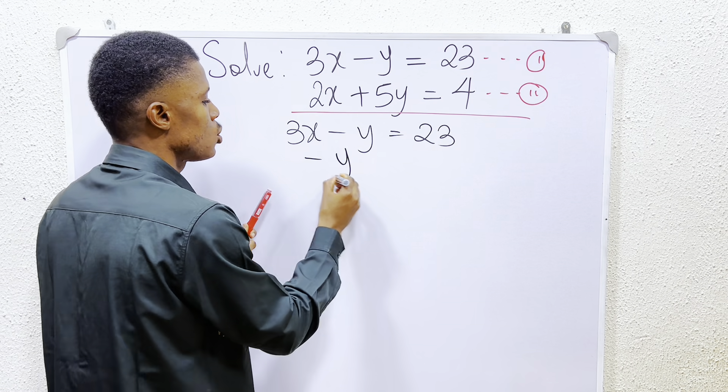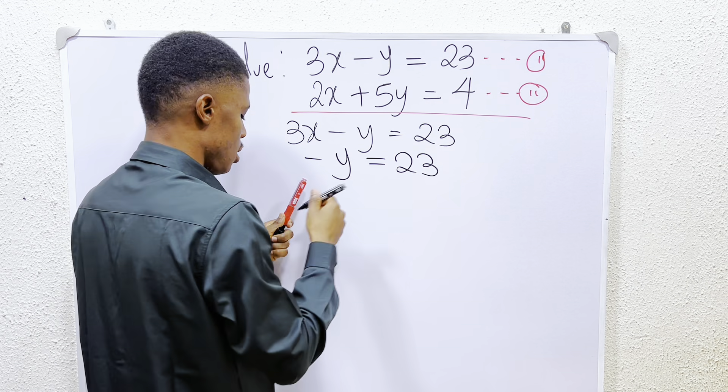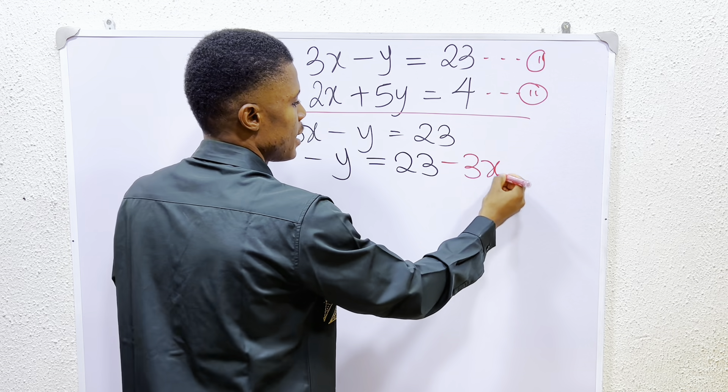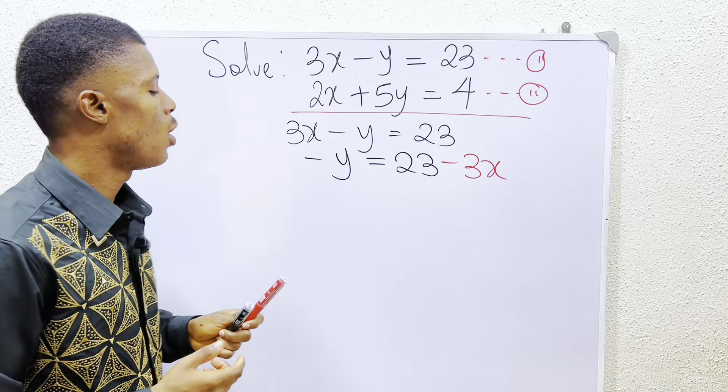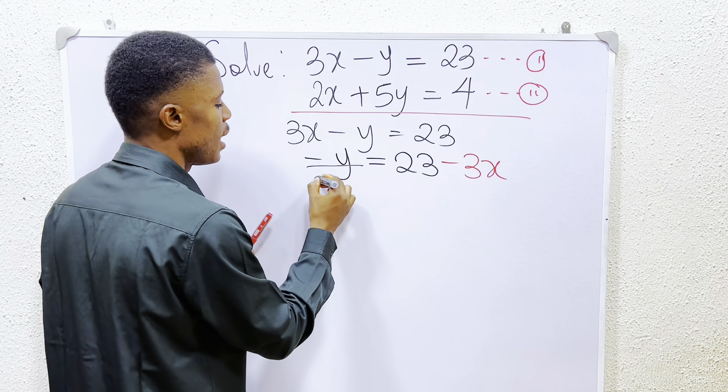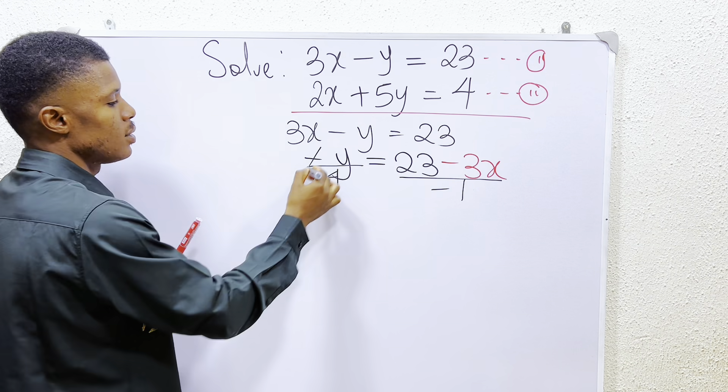So if I subtract that, I will now have minus y is left, and that is equals to 23 minus 3x, because I subtracted 3x from both sides. So for us to get y, we just have to divide through by minus 1, or divide by minus 1, so that the minus cancels out.